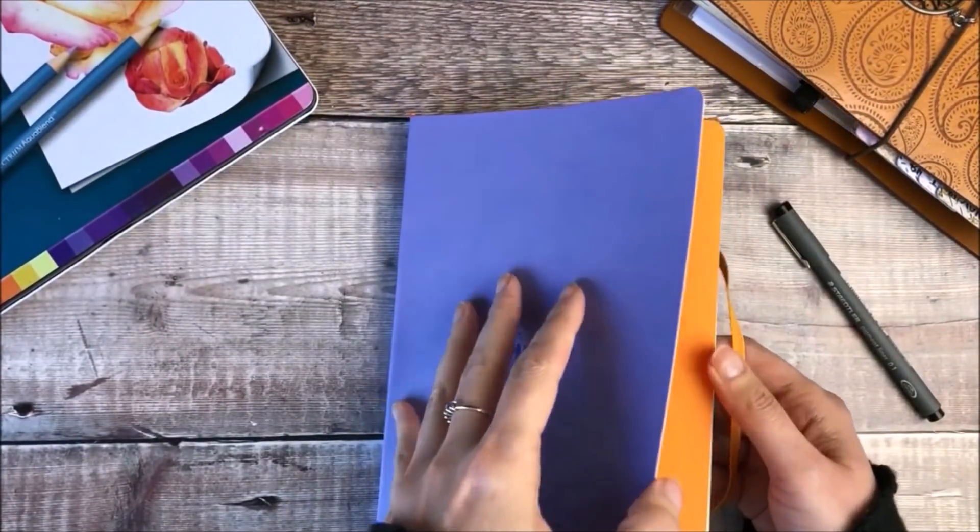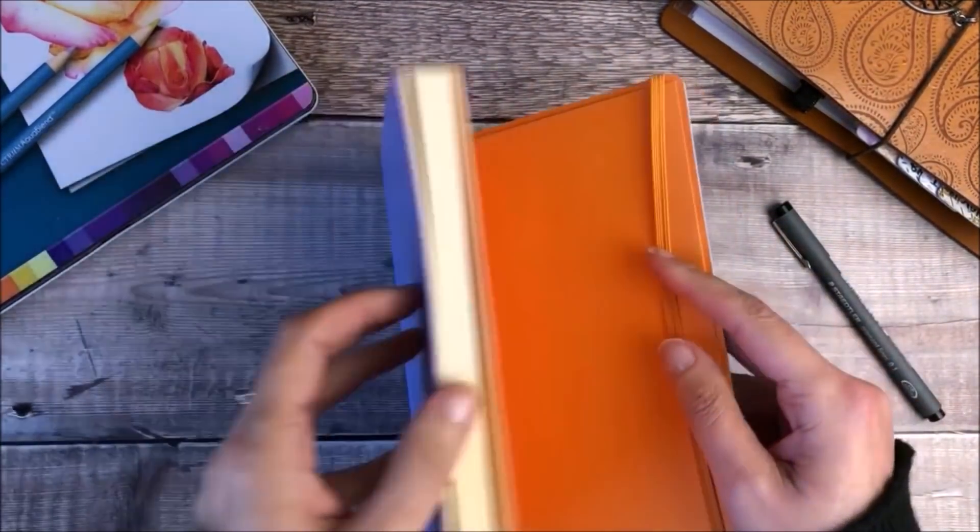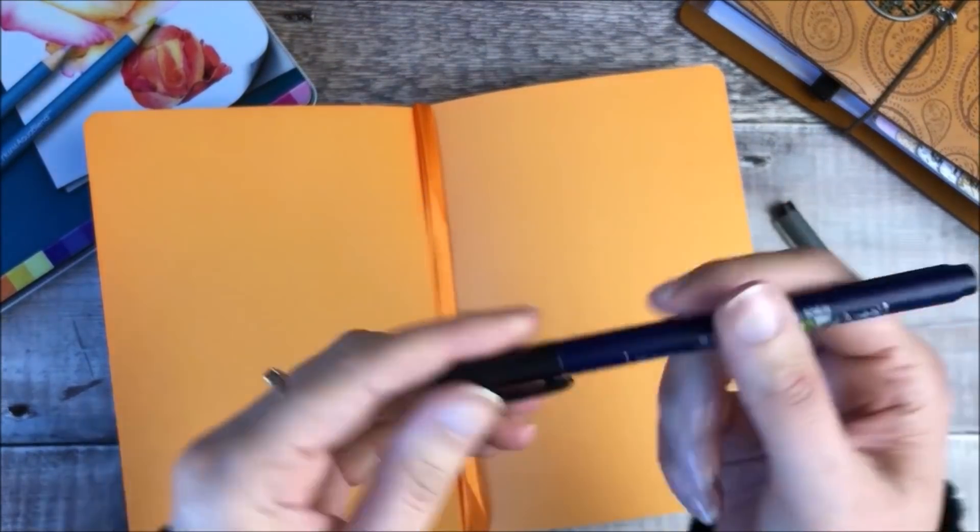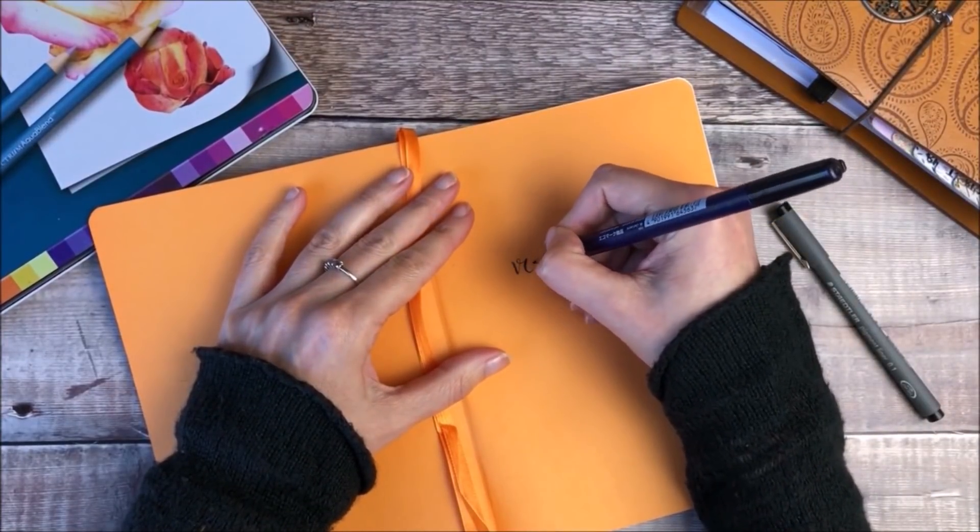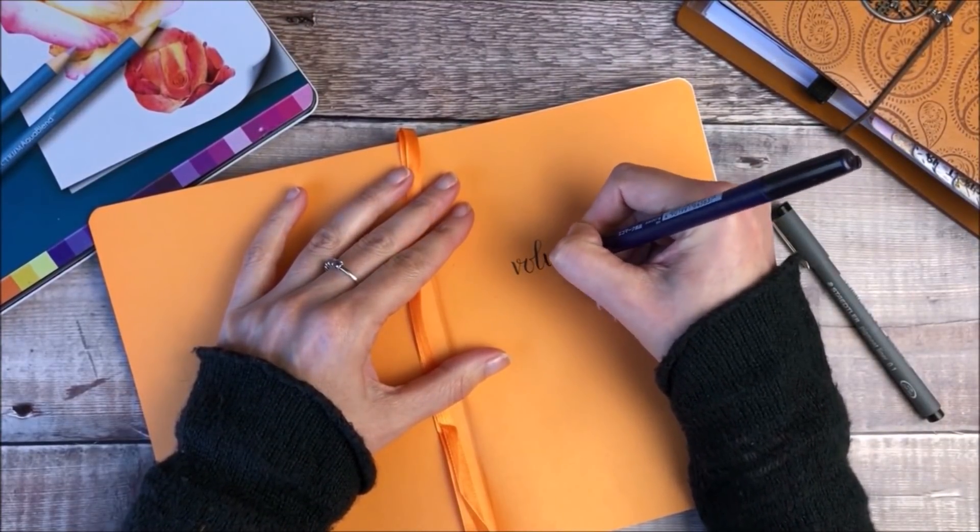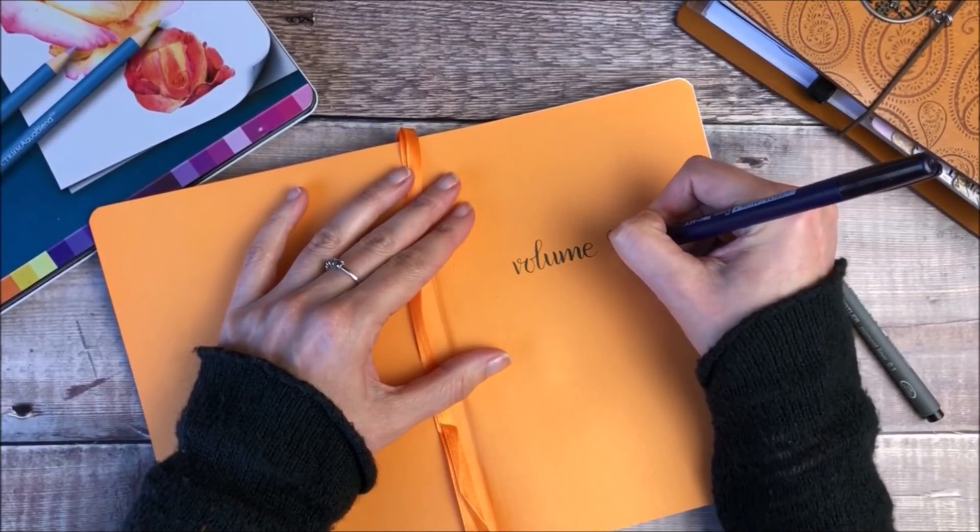I checked back through my other bullet journals and realized that this is going to be my ninth one, and that staggers me. I hadn't realized I'd been doing it for quite so long. I'm using a Tombow Fudenosuke brush pen with a firm nib just to write volume 9 on the inside page.